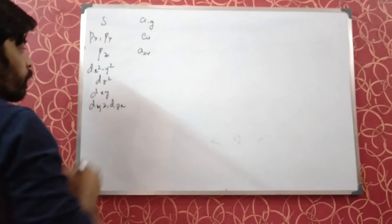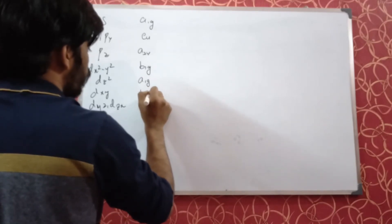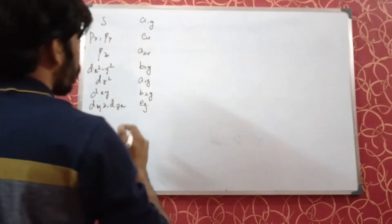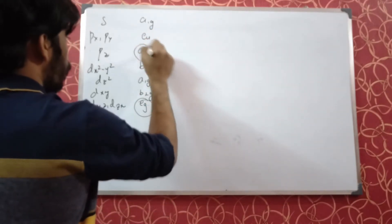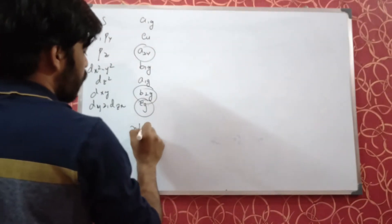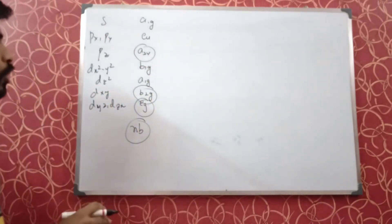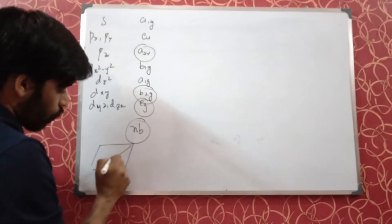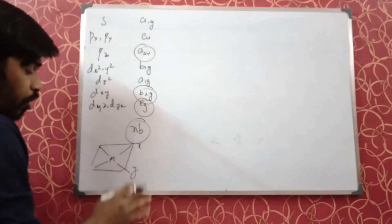The dx²-y² should have eg symmetry. The a2u and b2g orbitals do not take part in any bonding and are non-bonding orbitals, because they are not oriented along any of the axes. In square planar complexes, the ligands come from the xy direction, so those orbitals not oriented along the xy axis are excluded.